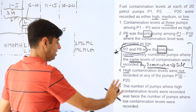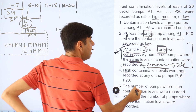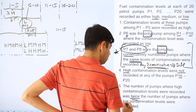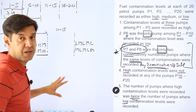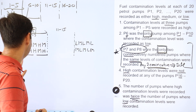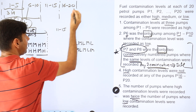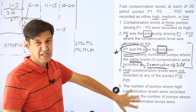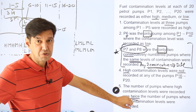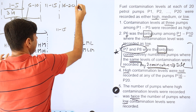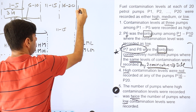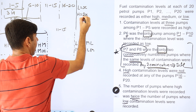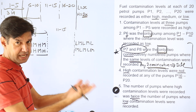One clue is left: the number of pumps where high contamination was recorded was twice the number where low was recorded — so High = 2 × Low. Let's say lows are x, then highs are 2x. Since highs are 2x, that's an even number. I'll count how many H's and L's I already have and work from there.